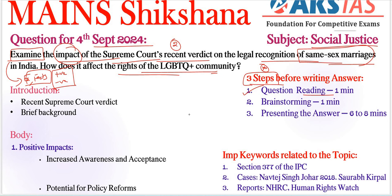'How' is a normal or general question tag — we need to give some information. The important keywords are: 'impact' (first keyword — as per the 'examine' tag, we need to write positives and negatives) and 'affect' (second keyword).